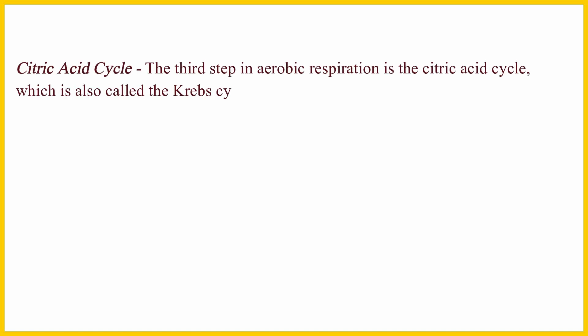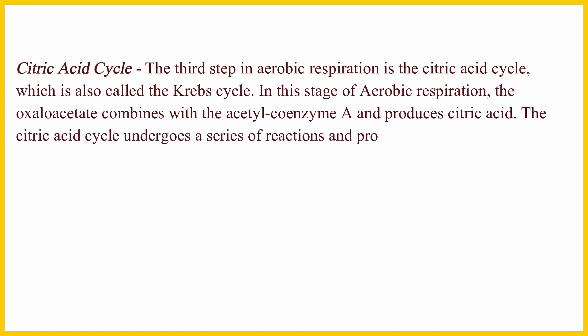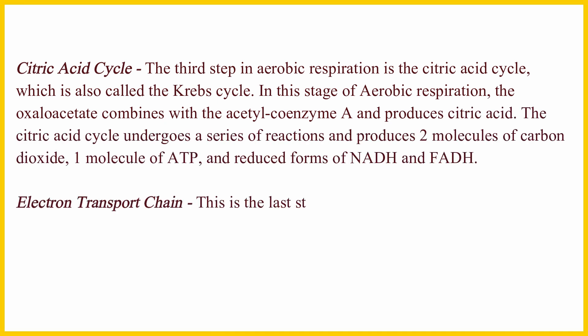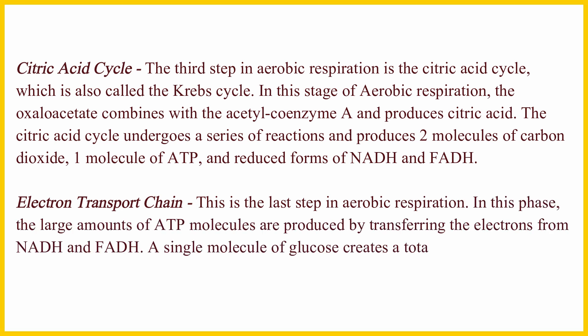The third step in aerobic respiration is the citric acid cycle, which is also called the Krebs cycle. In this stage, oxaloacetate combines with the acetyl coenzyme A and produces citric acid. The citric acid cycle undergoes a series of reactions and produces two molecules of carbon dioxide, one molecule of ATP, and reduced forms of NAD and FAD.